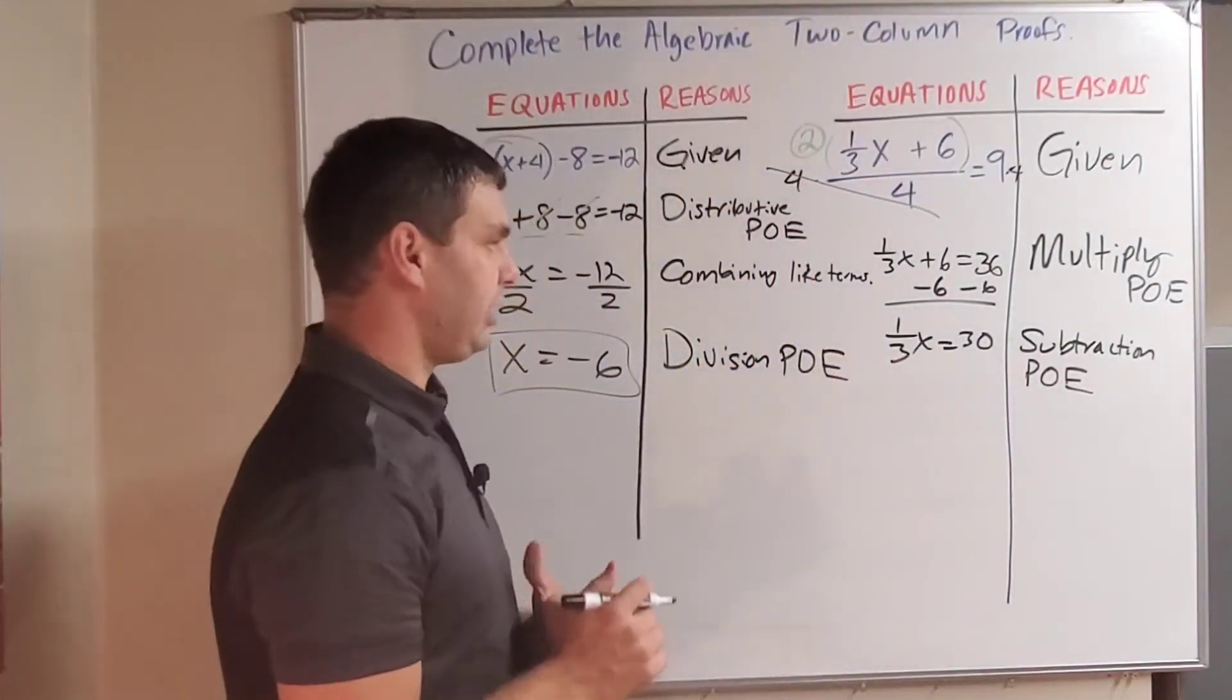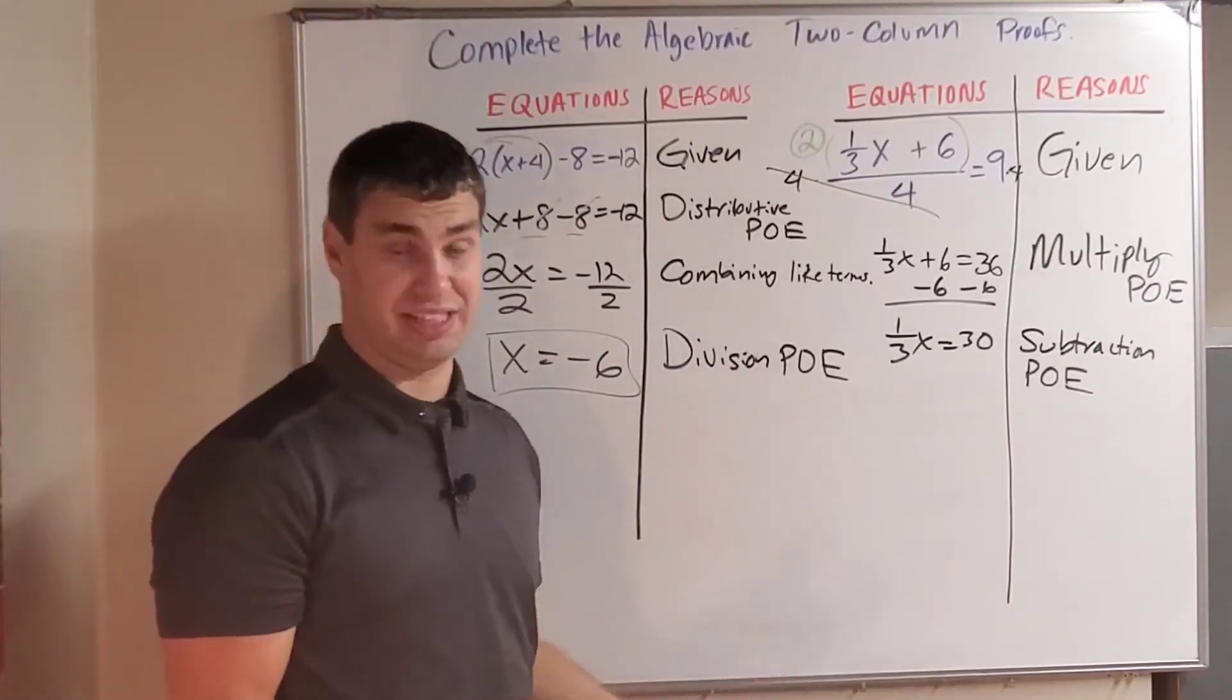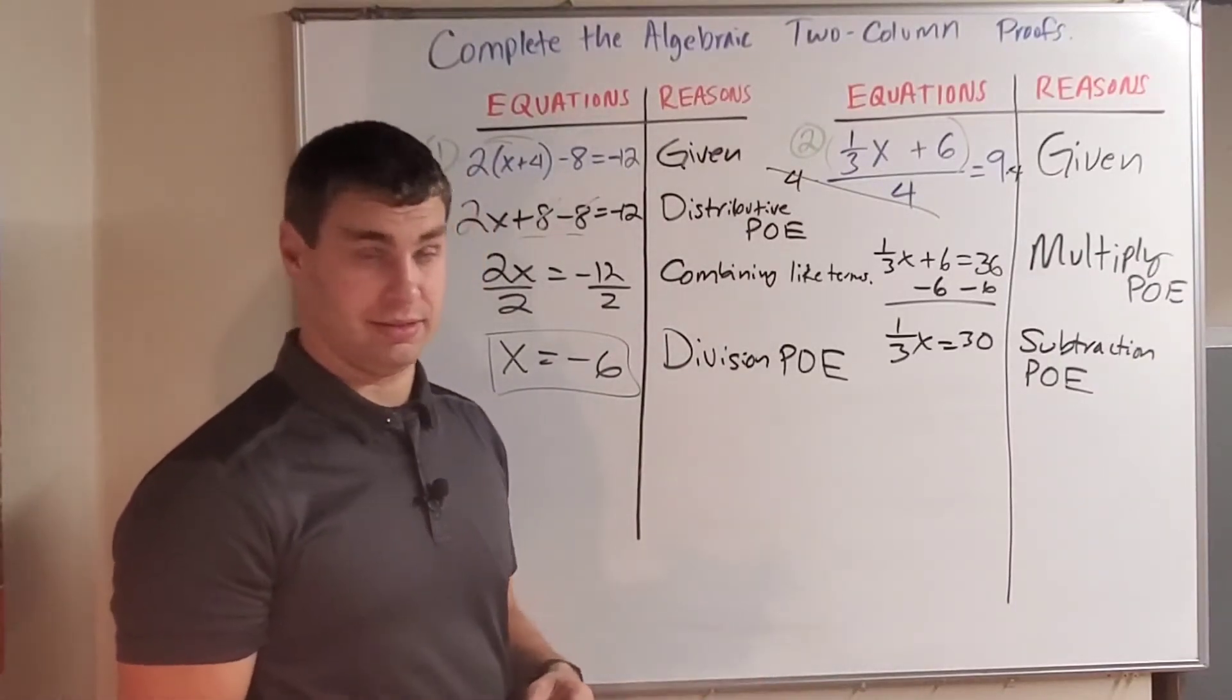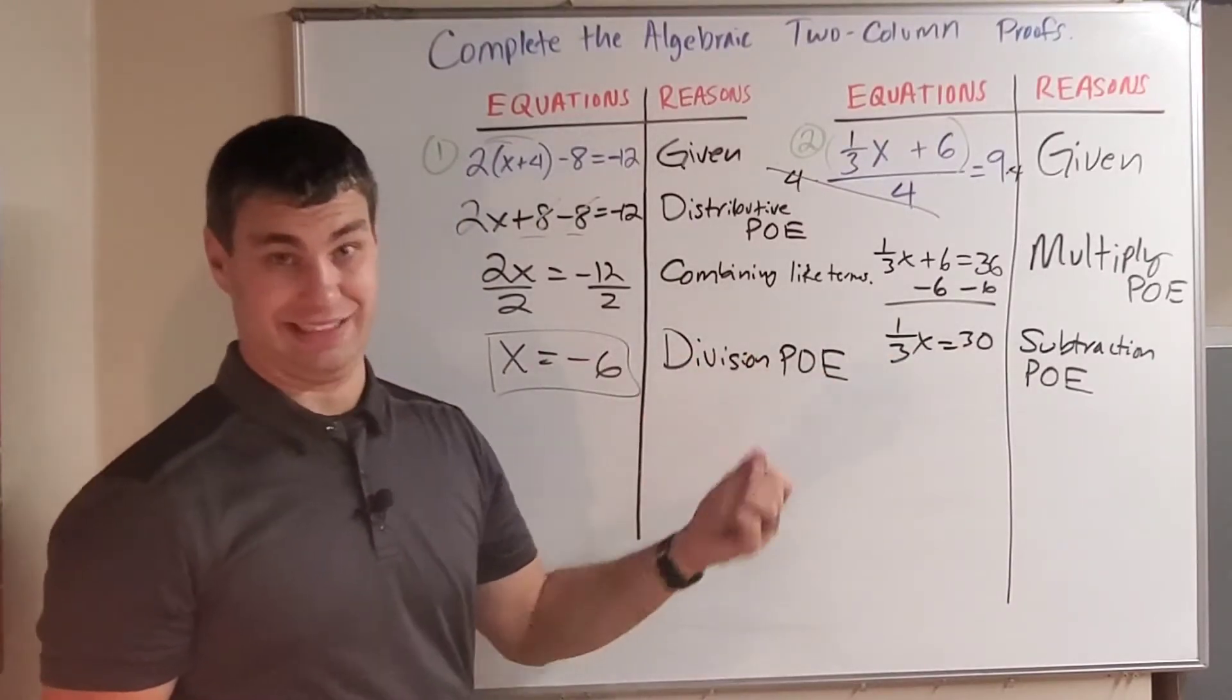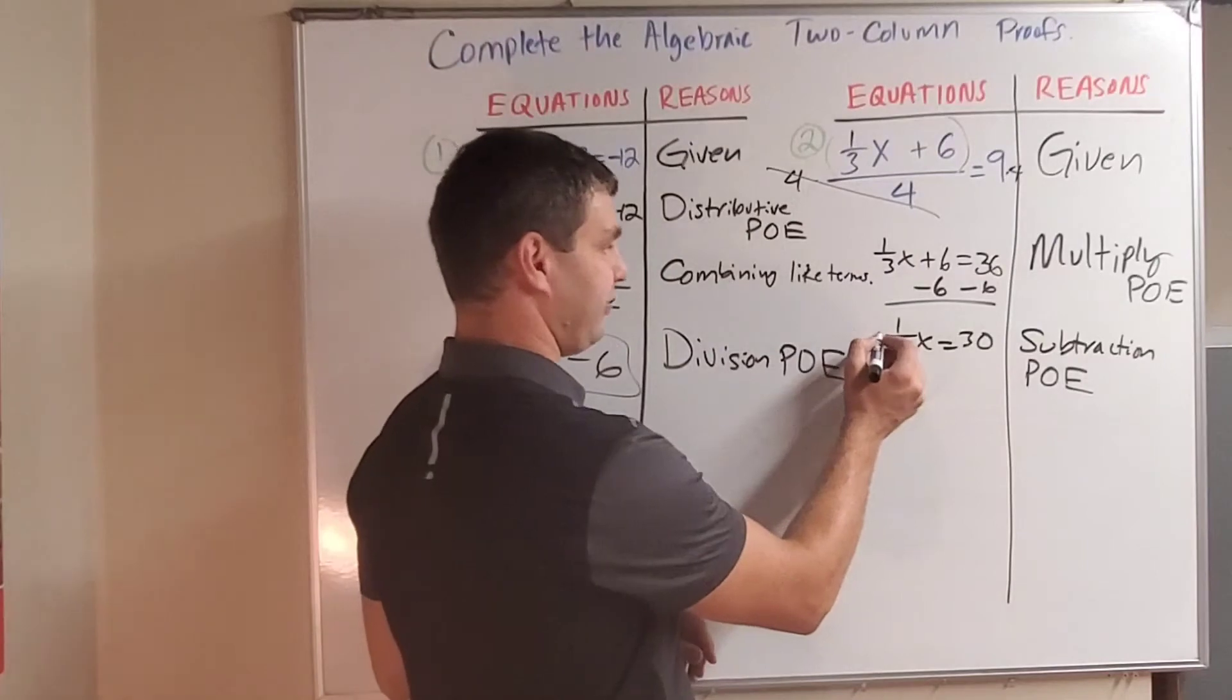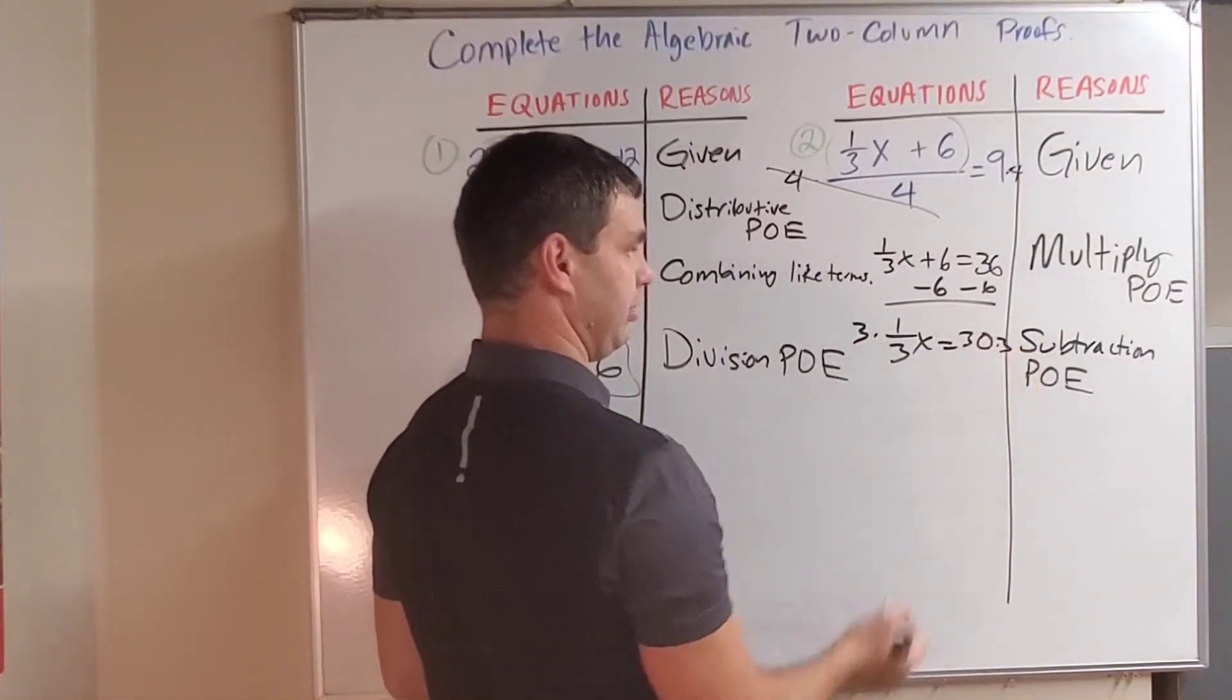Lastly, I have 1/3x = 30. Be a little bit careful here. It's tempting to say x is just 10, but that's not right. A third of 10 is not 30. A third of 90 is 30. And to get 90, you actually have to multiply by 3 on both sides.